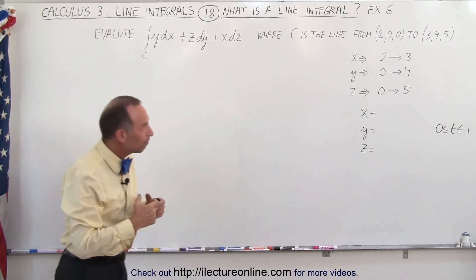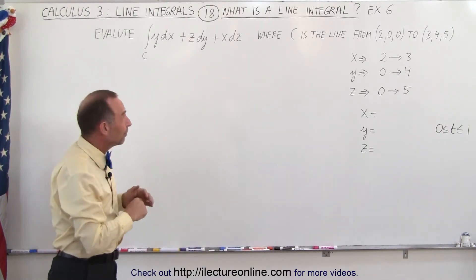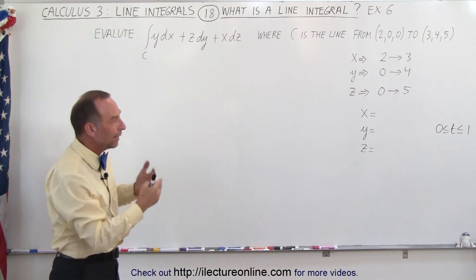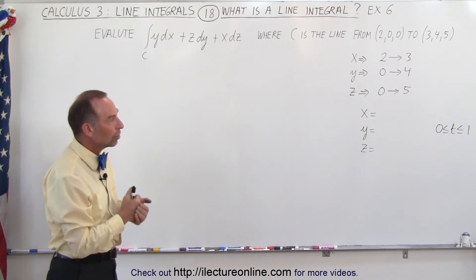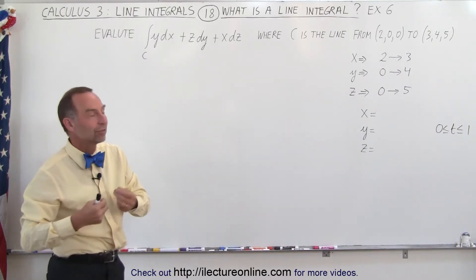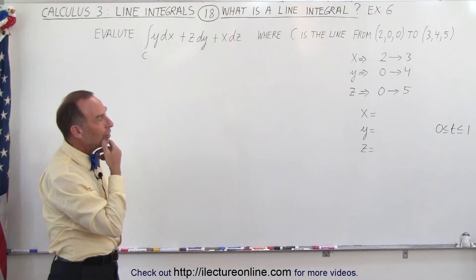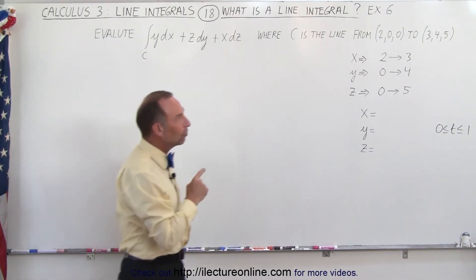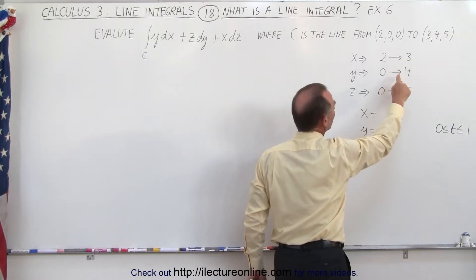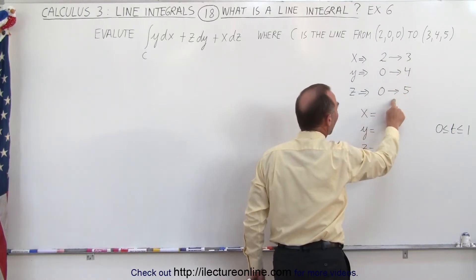Now the most troublesome or the most challenging part of this sometimes is finding the parametric equations. So let's find what those equations should look like. We're going to write x, y, and z in terms of the variable t. And how do we do that? Well, first of all, here we see that there's a change of 1 for x, a change of 4 for y, and a change of 5 for z.